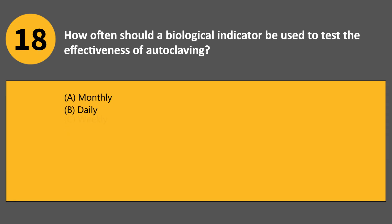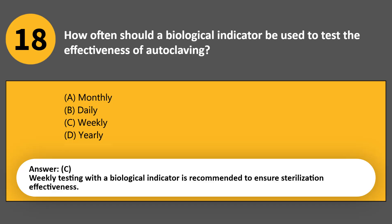How often should a biological indicator be used to test the effectiveness of autoclaving? A. Monthly. B. Daily. C. Weekly. D. Yearly. Answer C. Weekly testing with a biological indicator is recommended to ensure sterilization effectiveness.